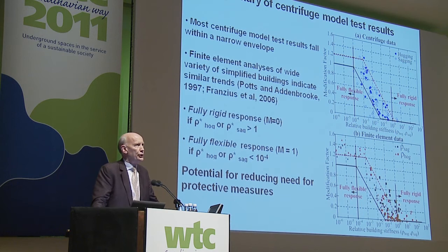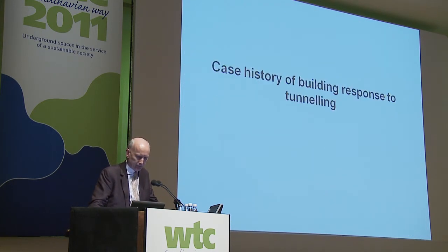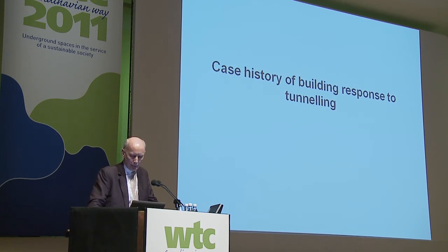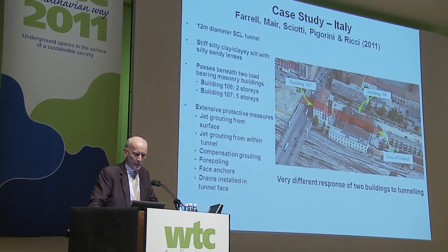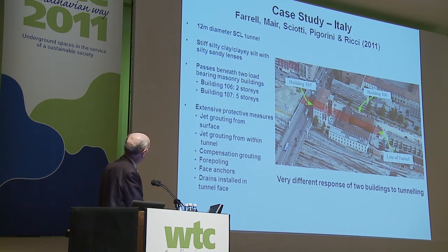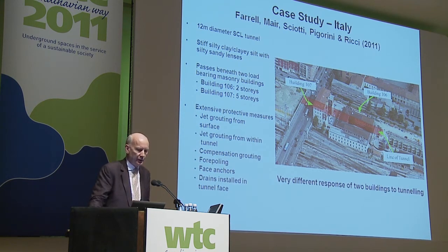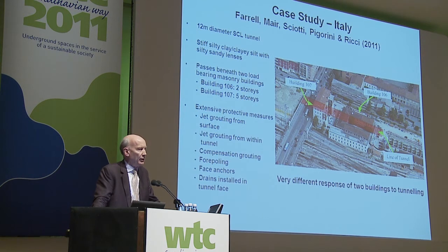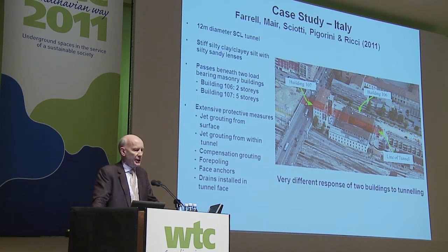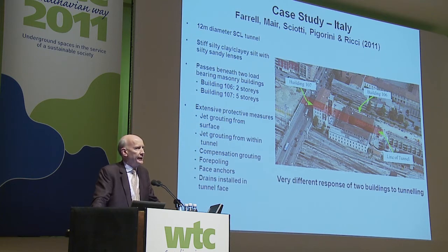There is considerable potential for reducing the need for protective measures. I'm going to show a case history of two buildings' response to a particular tunnel to illustrate this. This is a case study in Italy of a large 12-metre diameter tunnel which goes under two buildings — Building 106 and Building 107. The tunnel was in stiff silty clay, and extensive protective measures were used: sprayed concrete lining, jet grouting from the surface and within the tunnel, compensation grouting, fore-polling, face anchors, and drains in the tunnel face.